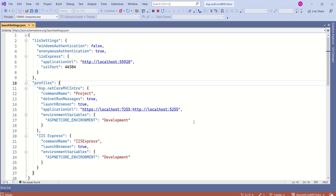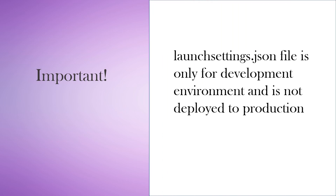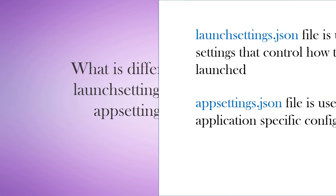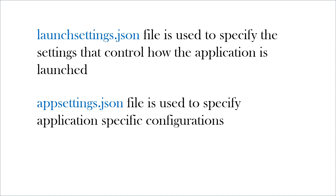This file lets you define different profiles and use them in your application. You can even modify this file and create your own custom profile. A very important thing to remember is that launchsettings.json is only used in the development environment and is not deployed to production. In production, these settings are configured through other means. The main difference between launchsettings.json and appsettings.json is that launchsettings.json controls how the app is launched, while appsettings.json is used to specify application-specific configurations. In short, both are configuration files but serving different purposes.